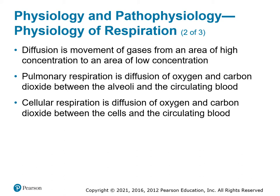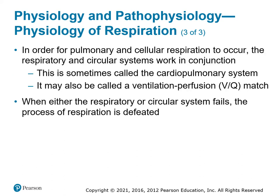The same thing happens at the cellular level. When oxygen gets to the cells through the red blood cells, it transfers over based on the same diffusion principles. To make everything work right, you need a good respiratory system and a good cardiovascular system. If one of the two doesn't work correctly, we have a VQ mismatch — and that's when we have upset patients.